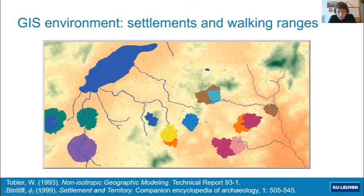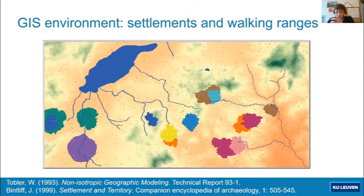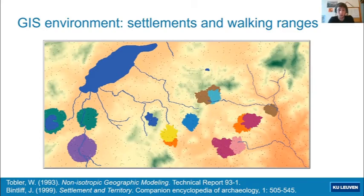We then used real settlement locations from our archaeological database as the home basis for our model communities, and implemented these in a friction map based on slope and Tobler's hiking function to delineate the areas that these communities could effectively exploit. We used the model proposed by John Bintliff for Iron Age to Classical Greece, where cultivated areas would be at most about 30 minutes walking distance from the community, whereas for woodland areas we assumed a maximum walking distance of about one hour. The black dots in the background are randomly generated clay sources available for communities to exploit.